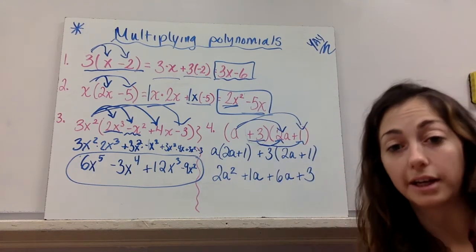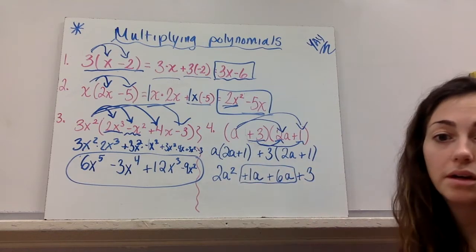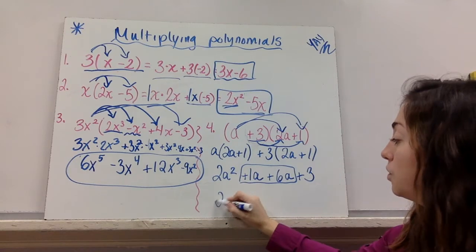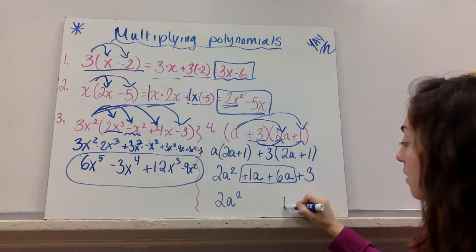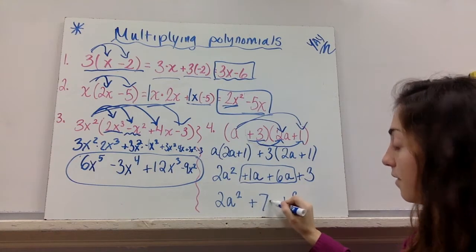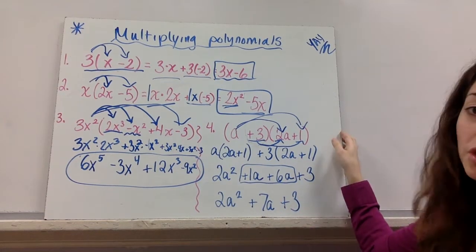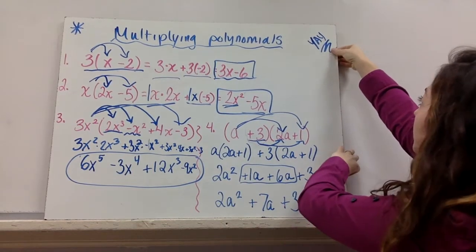Hey, in this case, I do have like terms. I've got these two middle terms are the same term. They both are a's. So my 2a squared comes down and my positive 3 comes down. And 1a and 6a is 7a. Great.